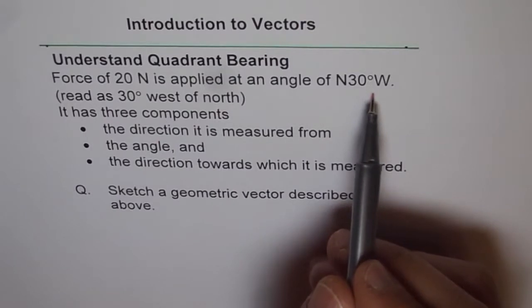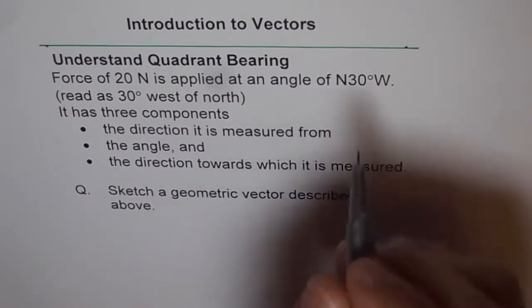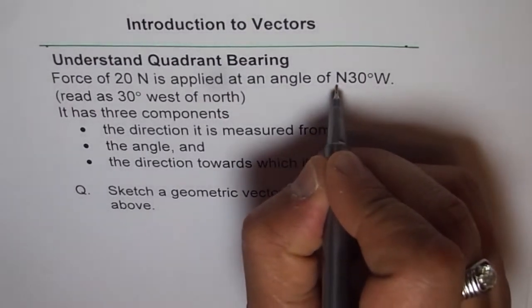That is how we represent our direction with quadrant bearing. Now, as you can see, it has basically three components.